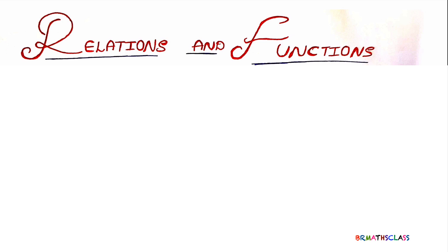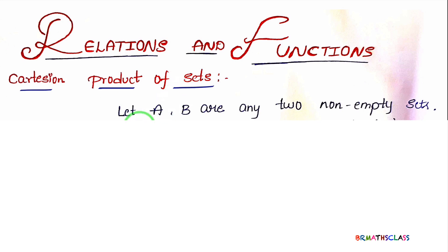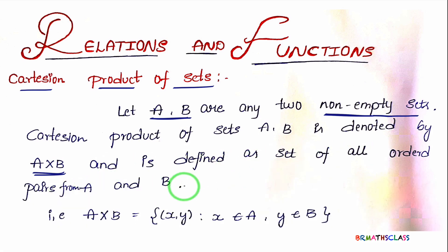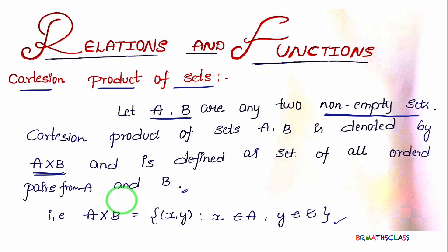First, see the definition of Cartesian product of sets. Let A and B be any two non-empty sets — meaning set A contains some elements and set B also contains some elements. Then the Cartesian product of sets A and B is denoted by A cross B. A cross B is defined as the set of all ordered pairs X comma Y such that X belongs to A and Y belongs to B.